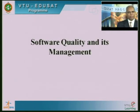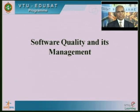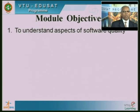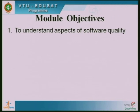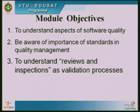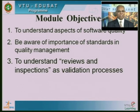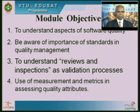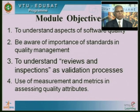That basically completes what we need to cover as part of software testing. The next module we would like to cover is what we call software quality and its management. Objectives of this module are: to understand aspects of software quality — what it is, its concerns and aspects; to be aware of the importance of standards in quality management; to understand reviews and inspections as a validation process; and to understand the use of measurement and metrics in assessing quality attributes.